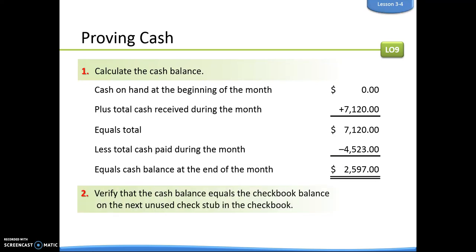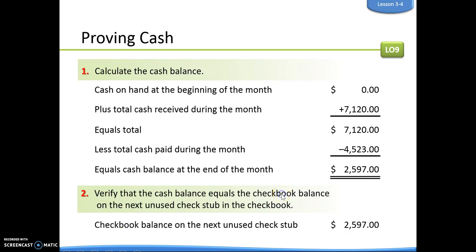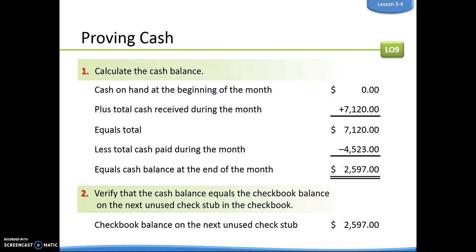Typically it will say you want to make sure it is the same as the next unused check stub — and our next unused check stub is $2,597. So you proved cash. It's very simple: you just need your beginning cash balance, how much you received during the month (cash debit), how much you paid during the month (cash credit), and then verify that equals your next unused check stub.